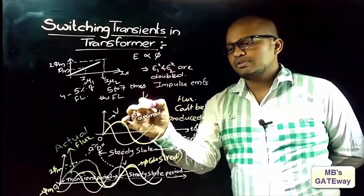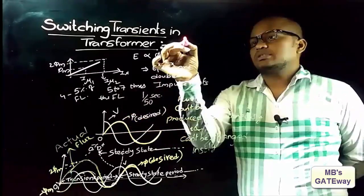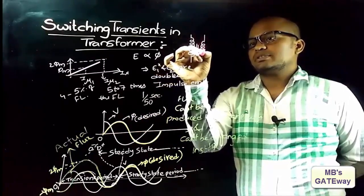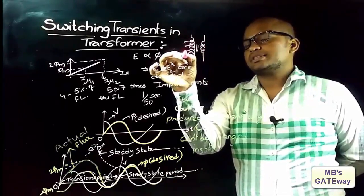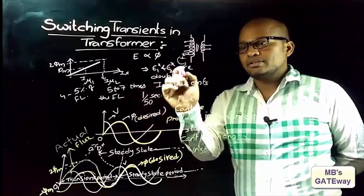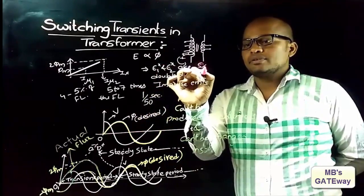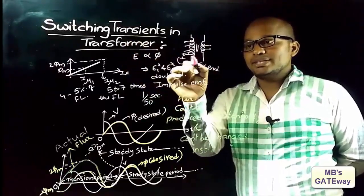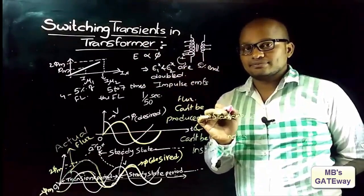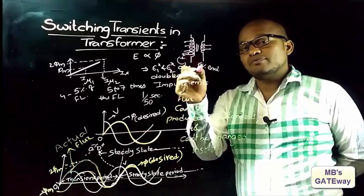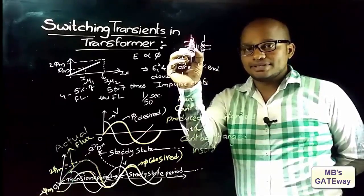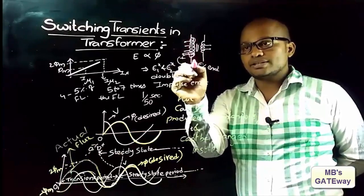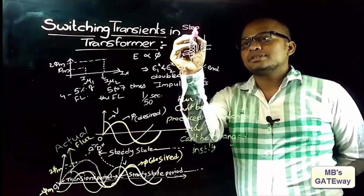These doubled EMFs are called impulse EMFs, and they exist for 1/50th of a second. Since these impulse EMFs persist for only 1/50th second, they will exist at the extreme 5% ends of the transformer windings. Switching transitions will cause damage to the extreme 5% ends of the transformers, which might short-circuit the turns — a very serious effect. Therefore, to protect these extreme 5% ends, more insulation must be provided there, and the type of insulation used is step-graded insulation.